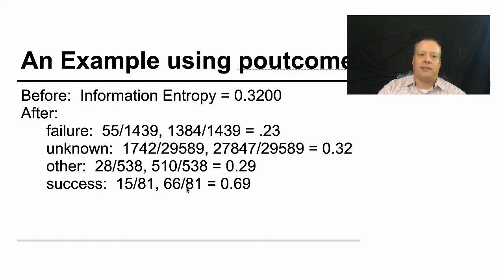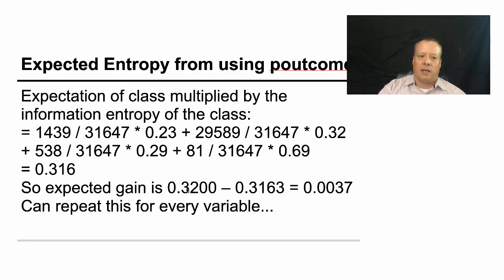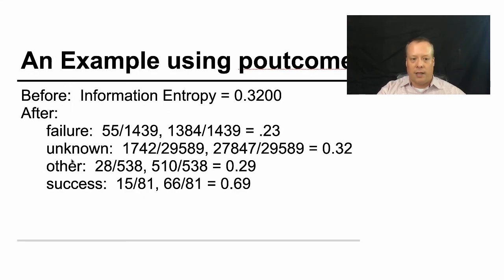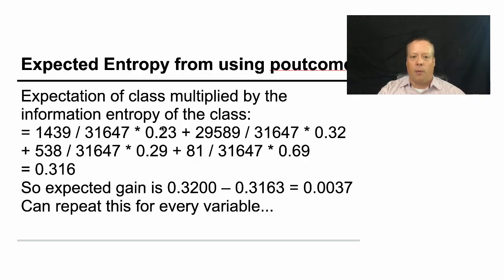So we can calculate all these numbers out and then we can use this expected information gain to calculate. So the expectation of a class multiplied by the information entropy of the class. So we're going to take how likely it is that an individual falls into one of these four categories, which is determined by the fraction of the individuals: 1439 divided by 31,647, 29,589 divided by 31,647, 538 divided by 31,647, 81 divided by 31,647. So we're going to take that and we're going to multiply times the actual information entropy of each of those. And that's the expectation of information entropy if we were to split on that category across all the individuals we see.